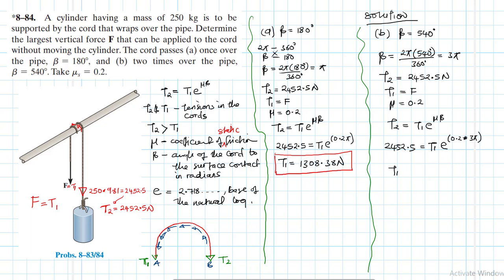Making T1 subject to the formula in case B, T1 will be equal to 372.38 newtons. When beta equals 540 degrees, you've seen how T1 keeps on reducing as we increase the angle. If we had to wrap that particular cord three times, you'll realize that T1 will keep on reducing to the point that T1 almost becomes equal to zero as we keep passing the rope over the pipe.